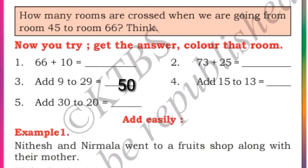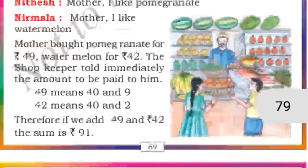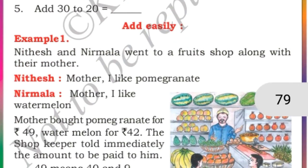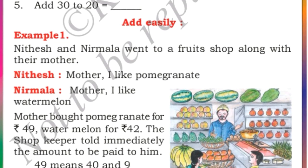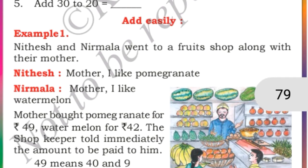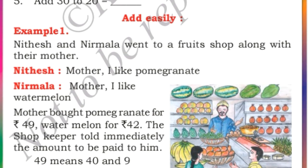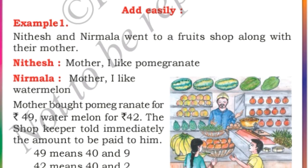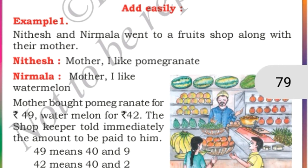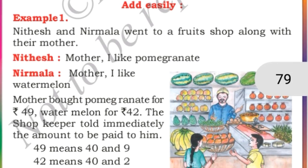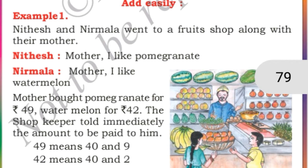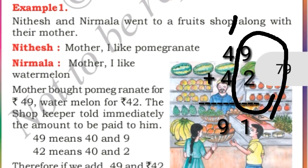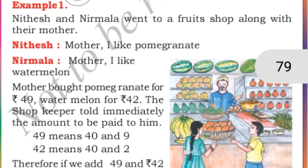Now word problems are there. See example number 1: Nitesh and Nirmala went to a fruit shop with their mothers. Nitesh's mother liked pomegranate and Nirmala liked watermelon. Mother bought pomegranate for 49 rupees and watermelon for 42 rupees. The shopkeeper told them the total amount immediately. So 49 plus 42: first add the ones place — 9 plus 2 is 11, carry 1. Then 4 plus 4 is 8, plus 1 carry is 9. So the sum is 91.